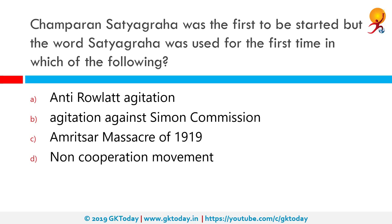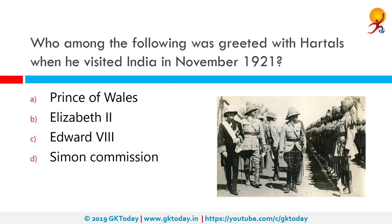Champaran Satyagraha was the first to be started, but the word 'Satyagraha' was used for the first time in which of the following? The correct answer is the anti-Rowlatt agitation. This happened in 1919 when Gandhiji gave a call for Satyagraha against the Rowlatt Act passed by the British. The act restricted freedom of expression and strengthened police powers. Mahatma Gandhi, Mohammed Ali Jinnah and others strongly opposed this act.